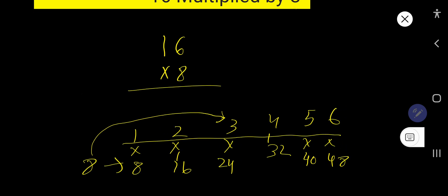So 8 times 6 equal to 48. Write 8, carry 4 to the next column. 8 times 1 is 8 plus 4, 12. That is 128 is the answer.